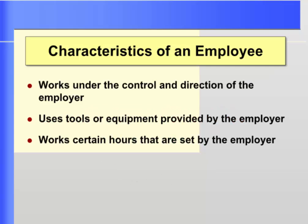An employee is a person who is hired by and works under the control and direction of the employer. In most situations, an employee works in the employer's facility using the employer's tools under the employer's direct supervision. An independent contractor, by contrast, works unsupervised, usually away from the employer's facility. This chapter discusses withholding for an employee, not an independent contractor.